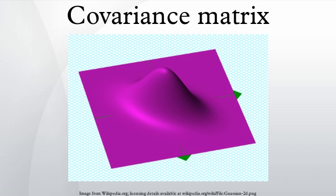The matrix is also often called the variance-covariance matrix since the diagonal terms are in fact variances.